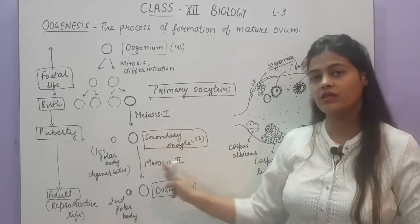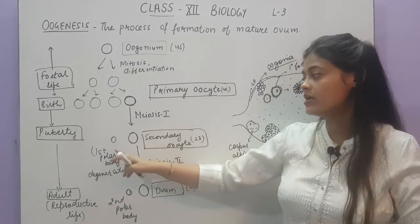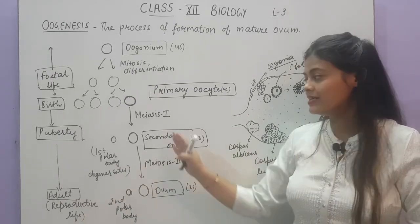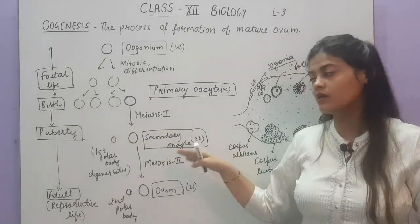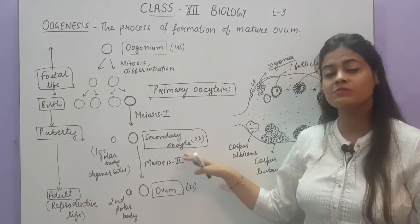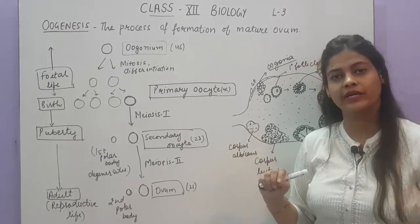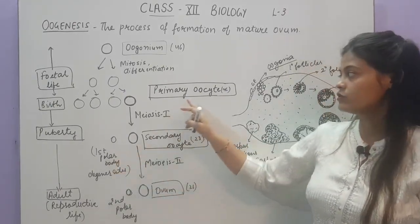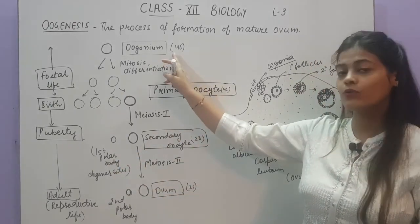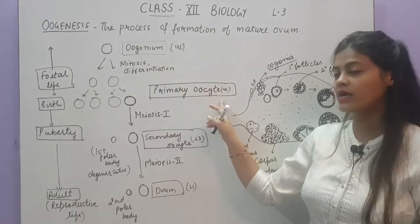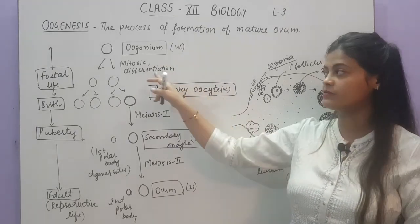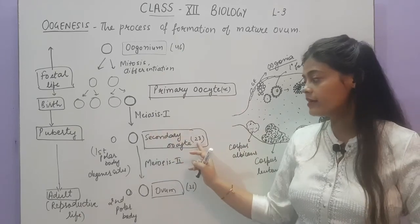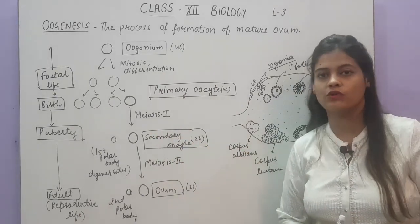The first polar body is of no use — it is formed simply to reduce the number of chromosomes in the secondary oocyte to 23, and then it degenerates. So: oogonia has 46 chromosomes, primary oocyte formed by mitosis also has 46, but secondary oocyte has 23 chromosomes after meiosis 1.